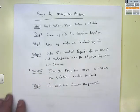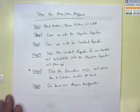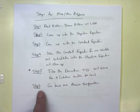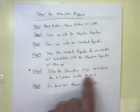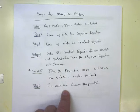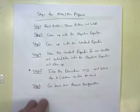Step five: take the derivative, set it equal to zero, and solve. But don't forget step number six. Because once you take the derivative, set it equal to zero, and solve, you've got your solution — but go back and answer the question. Don't forget to do step number six.